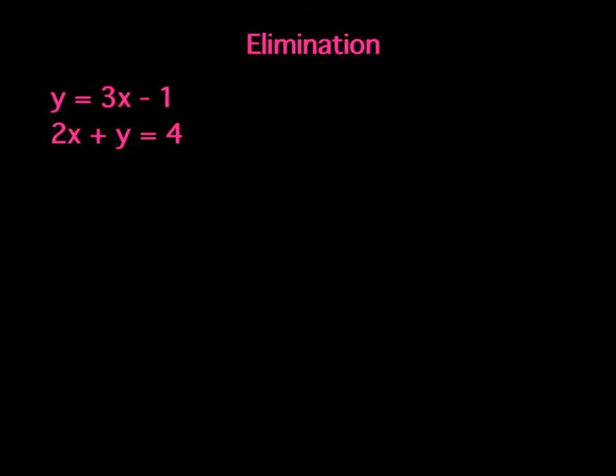Now, let's look at elimination. Elimination, you must have the x and the y on the same side. Did you just pause the camera and put in your notes, elimination, x and y must be on the same side? The first thing I'm going to do to this equation is subtract the 3x to the other side. This equation will become negative 3x plus y equals negative 1. The second equation I'm going to keep the same for now. What I'm looking at is whether or not I can eliminate a variable, because if I can eliminate a variable, then I can solve for the other variable.